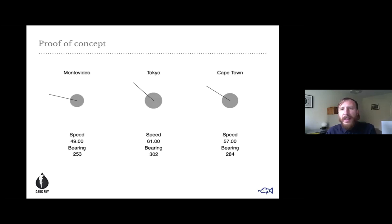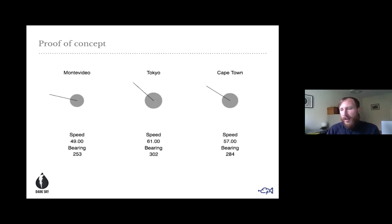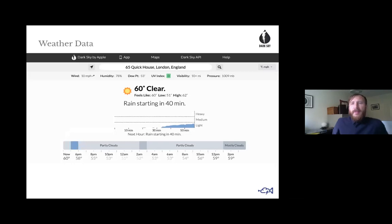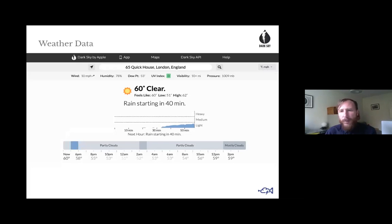It produced some quite strange and slightly spooky music because I hadn't mapped it to a particular musical tuning system — it just takes those values and applies them, generating unconventional music. About the weather data: I used Dark Sky. At the time they were an independent company, but they've since been bought by Apple, so at some point in 2021 my application would need to change as they were likely to modify the API.